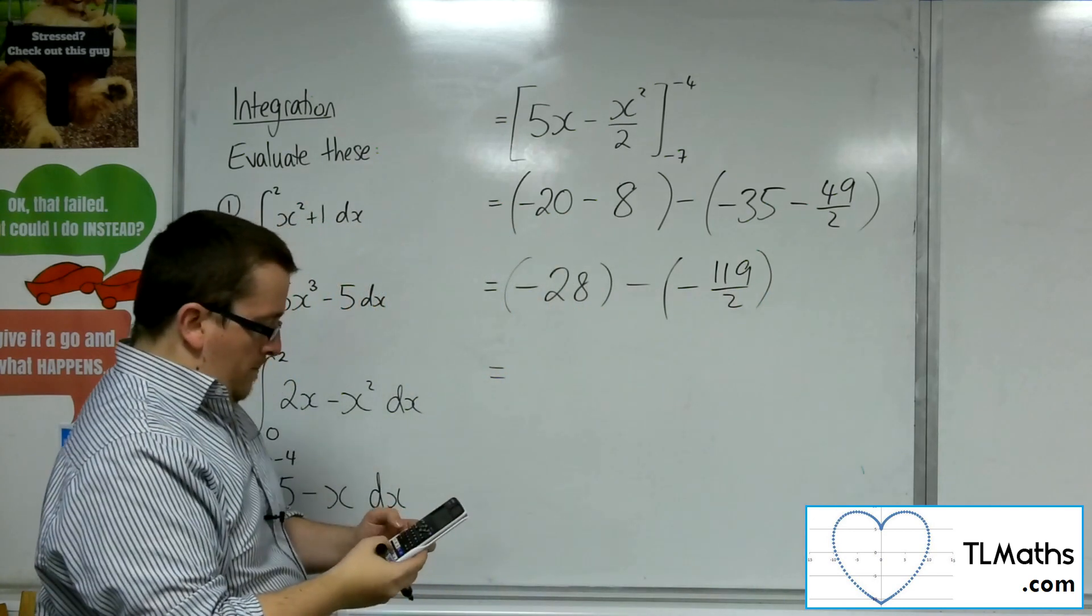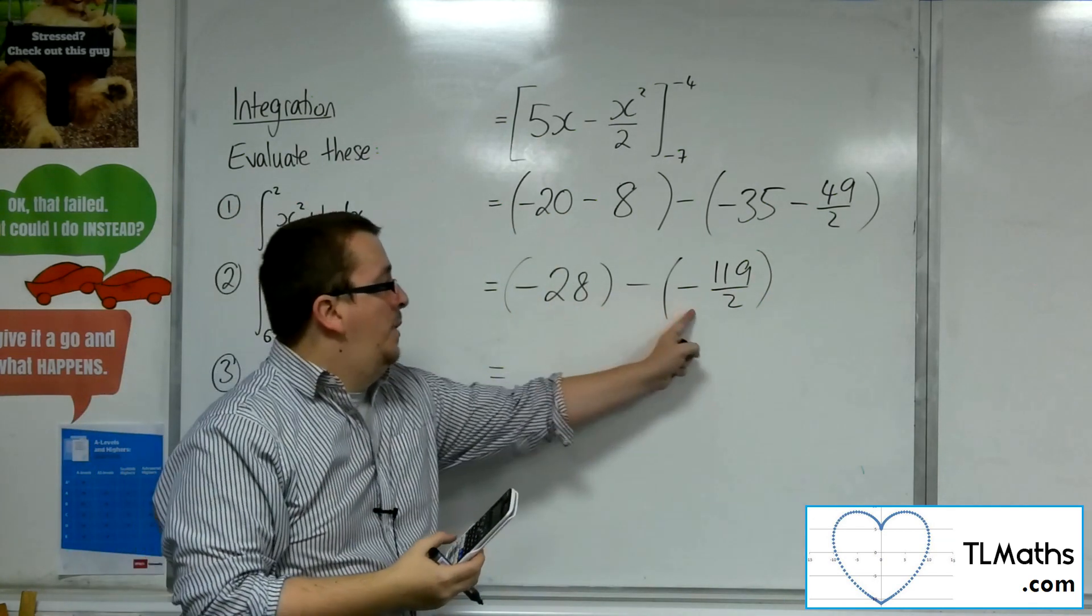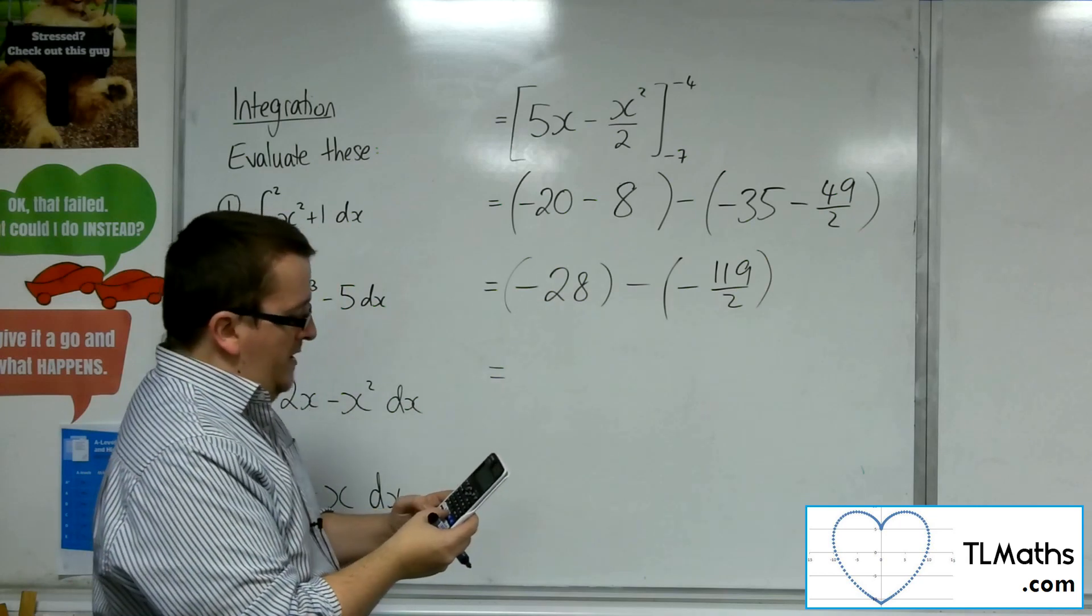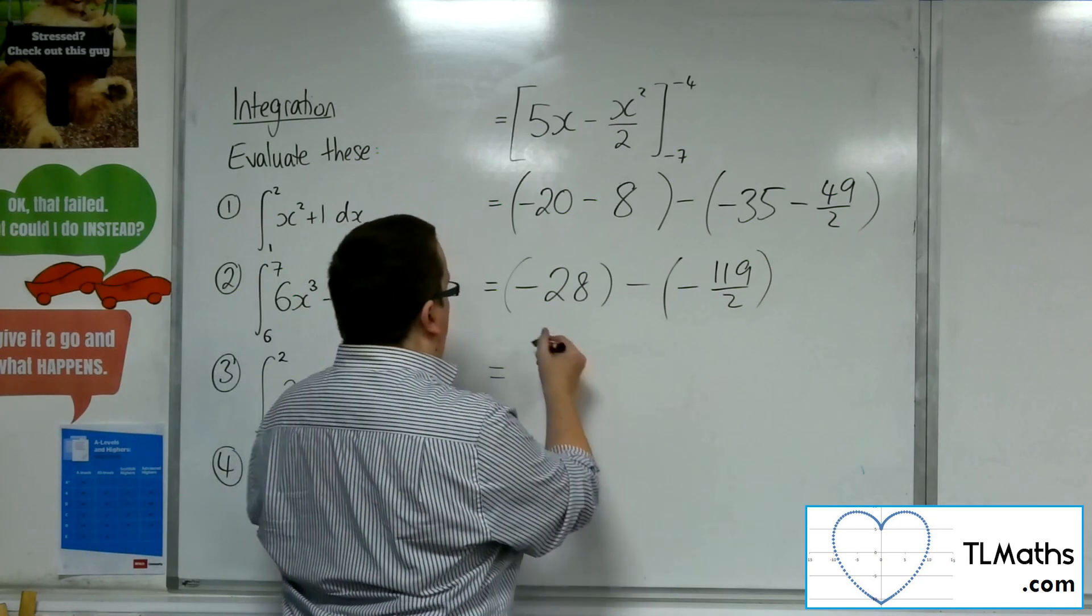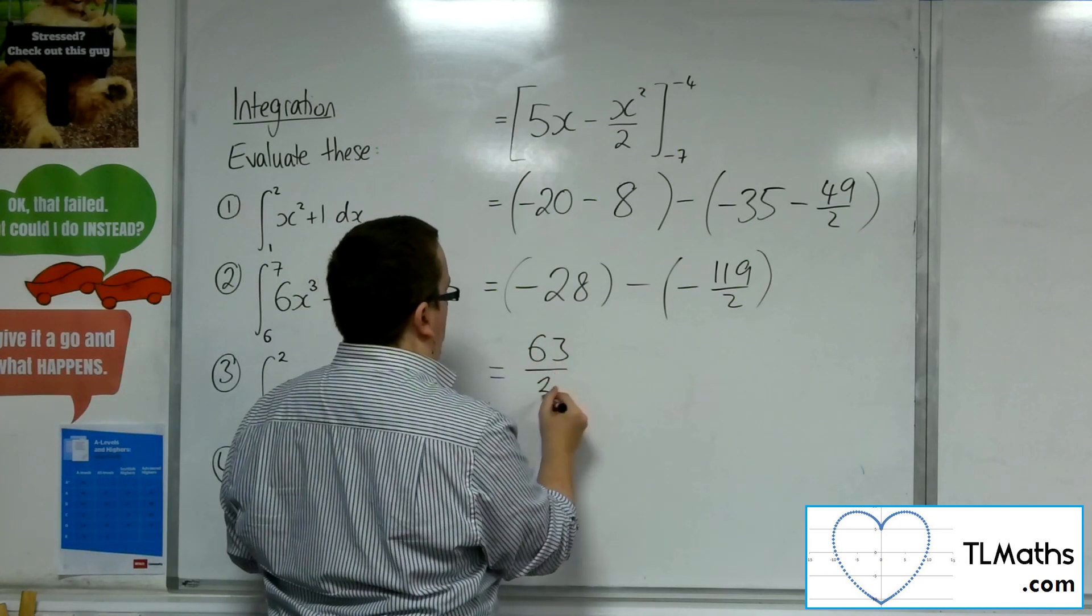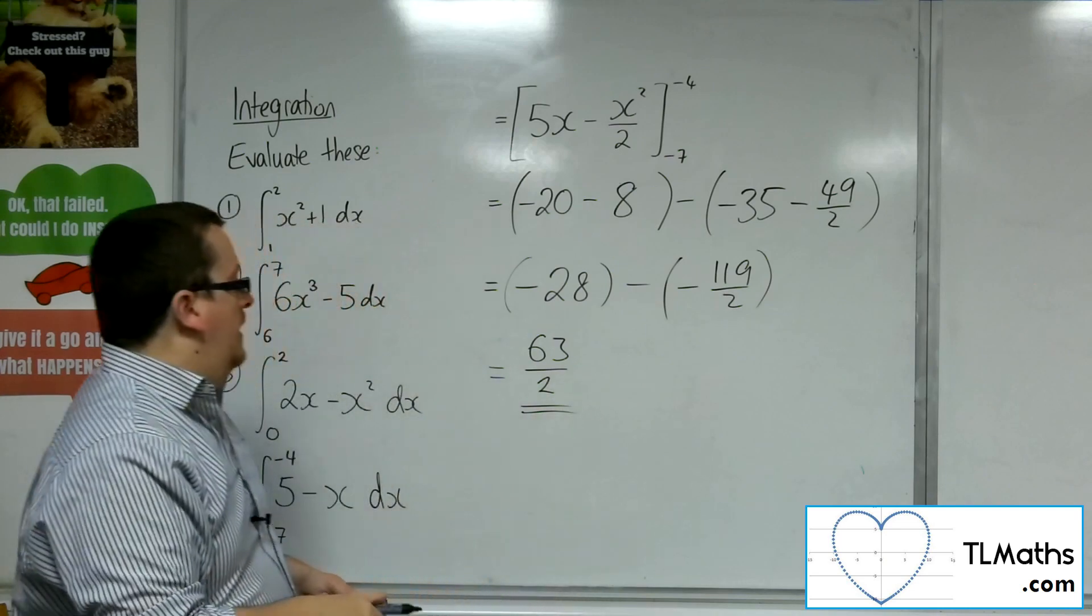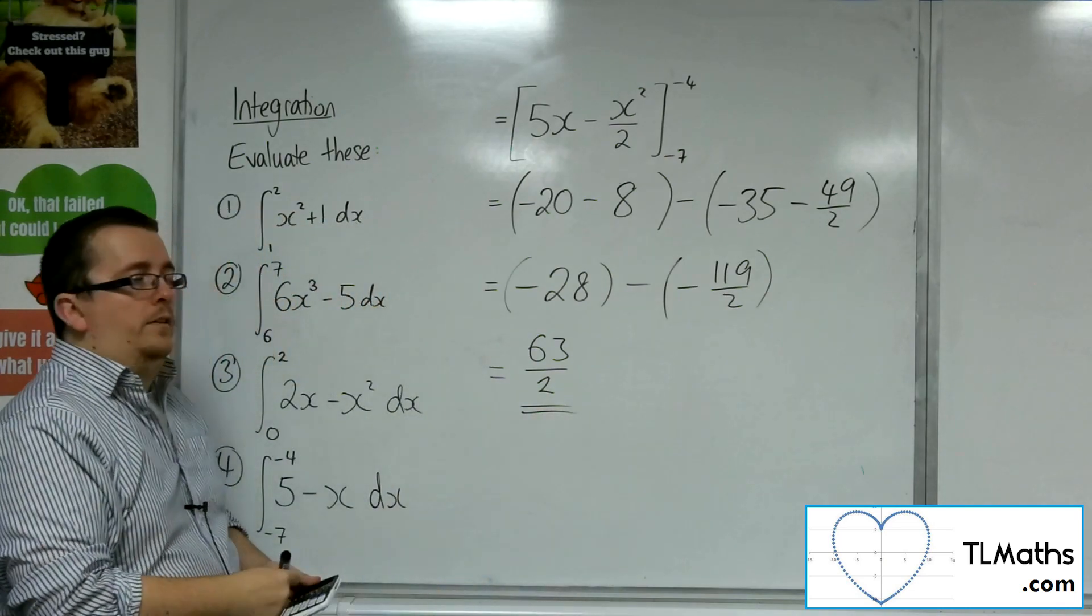So minus 28 plus 119 over 2 is 63 halves. And so that is the answer to number 4.